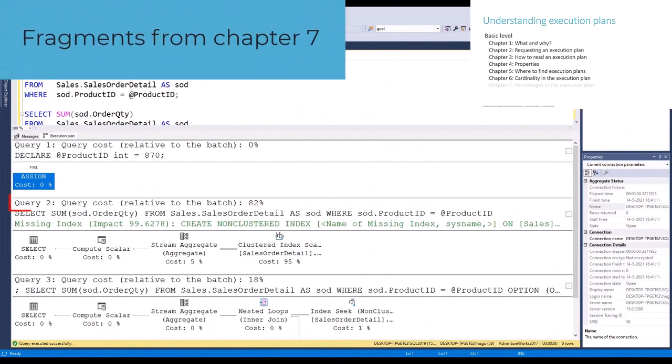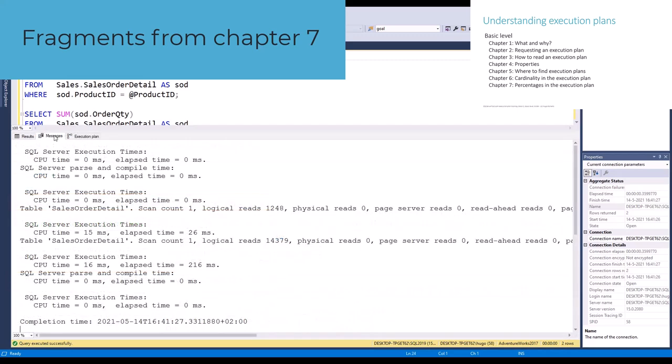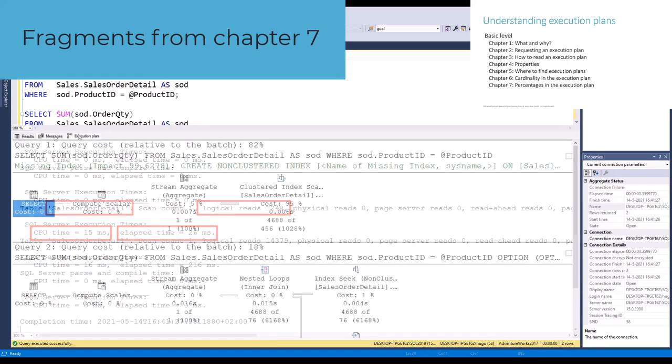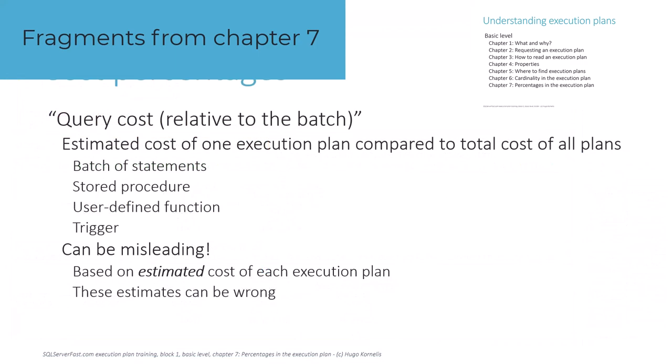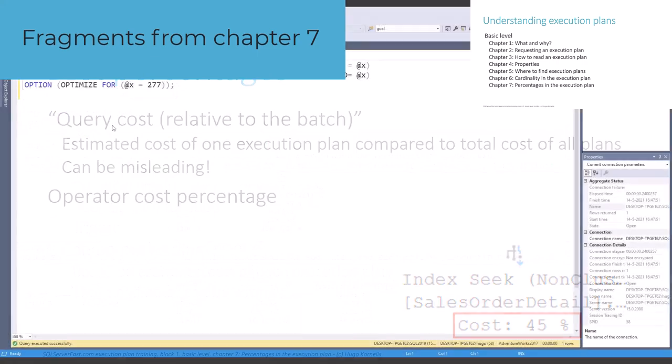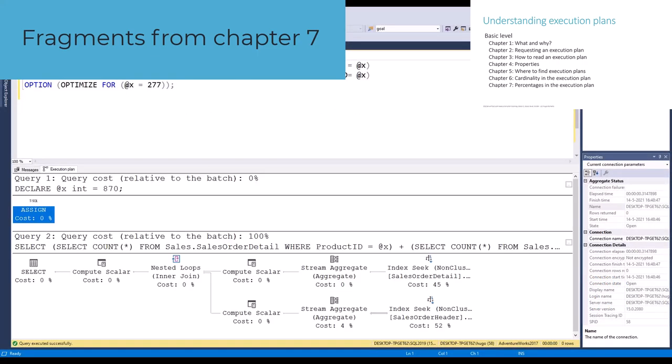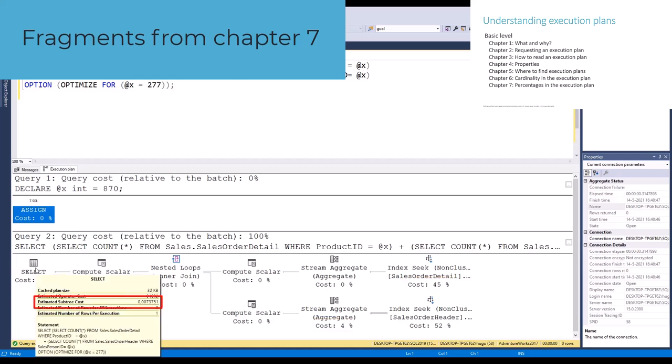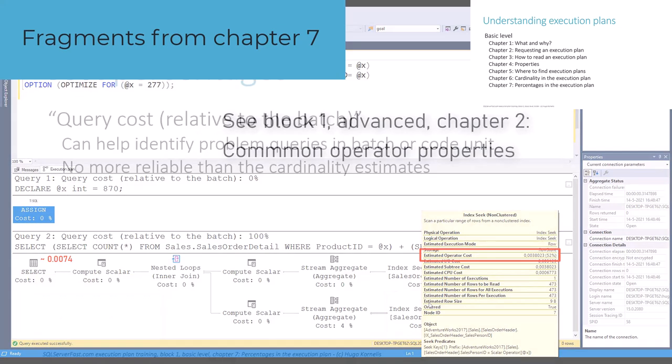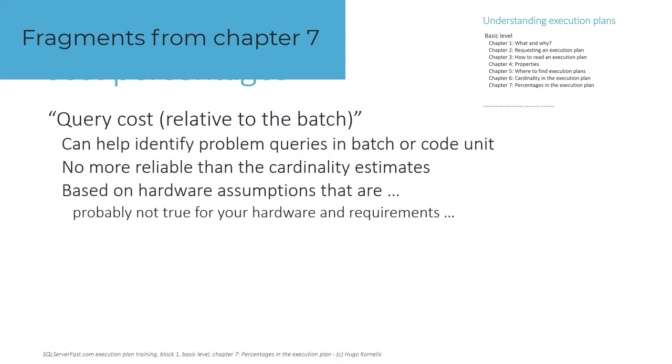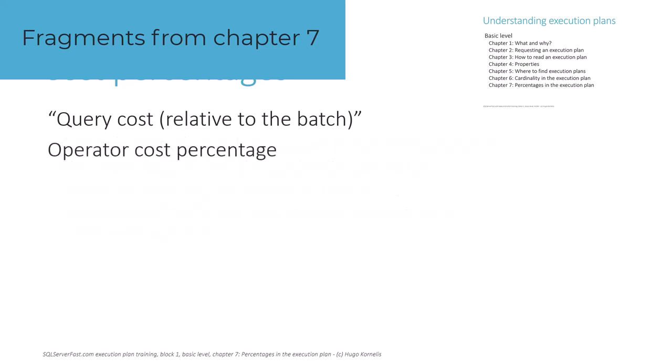The final chapter talks about perhaps the most common misperception when working with execution plans, one that throws off not only beginners but also hardened professionals. The percentages displayed as query cost relative to the batch and as operator cost relative to a query. These numbers can be very useful if you know what they represent, and more important, know what they don't represent. Using these without understanding what they actually mean is very dangerous, because it can seriously mislead you and cause you to waste your time and energy on the wrong parts of an execution plan.